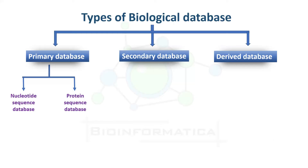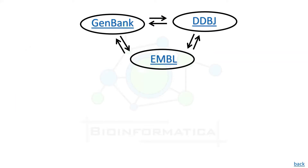Starting with the primary database, differentiated as nucleotide sequence database and protein sequence database. Few examples of nucleotide sequence databases are GenBank, DDBJ, and EMBL. These three include sequences submitted directly by scientists and genome sequencing groups, as well as sequences taken from literature and patents. All published nucleotide sequences are requested to be deposited in one of these three databases, and data are exchanged among them on a daily basis.